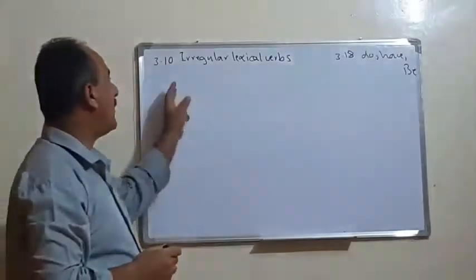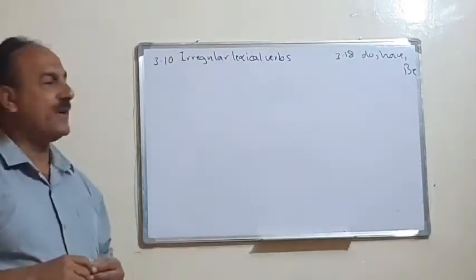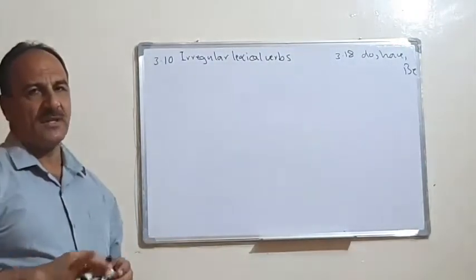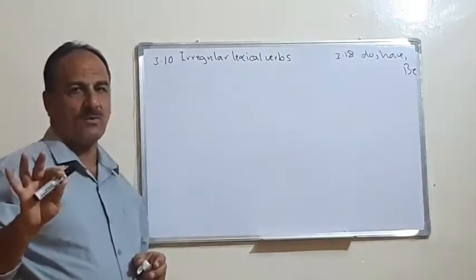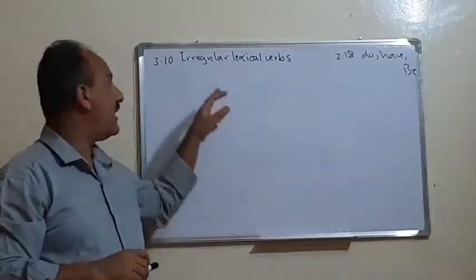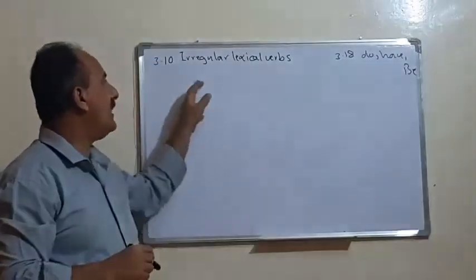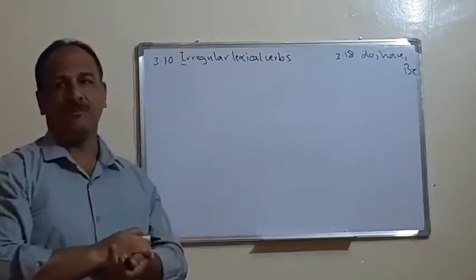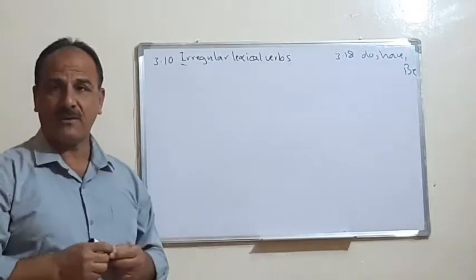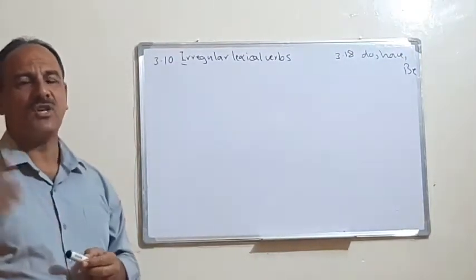Last time we talked about the lexical verb and we said it can be either regular or irregular. We don't have a problem with the regular because we simply add '-ed' for the past and '-ed' for the past participle. The problem is with the irregular lexical verb. Irregular means not regular — when we want to change the verb from present to past or to the past participle, we have some change in the structure of the verb.